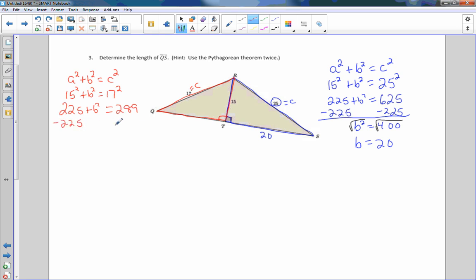Subtract 225 from both sides, and that cancels, and I get B squared equals 64. If I take the square root of both sides, I get B equals 8.